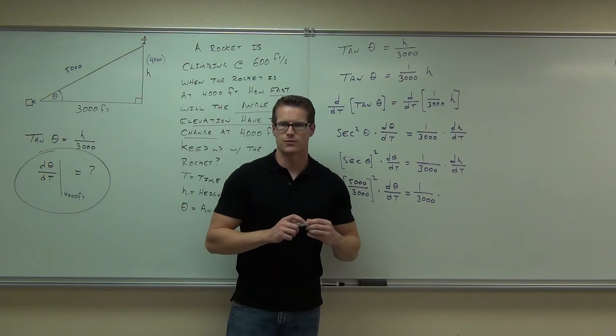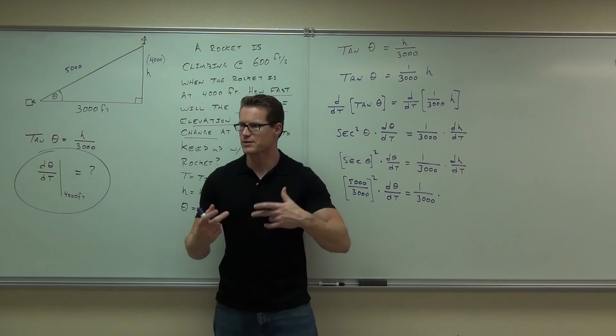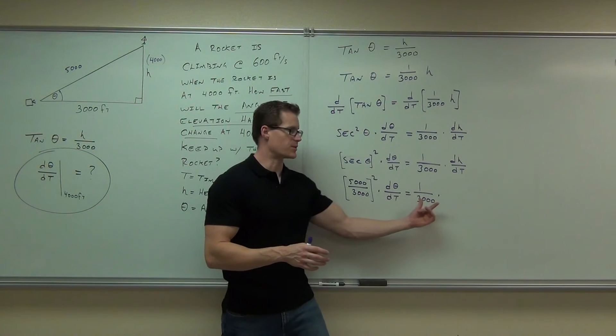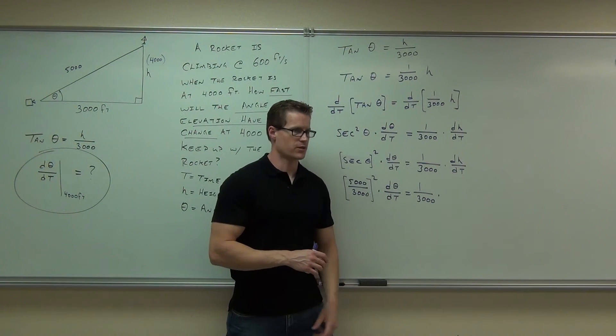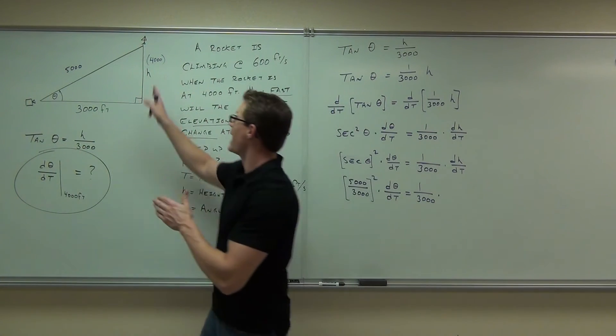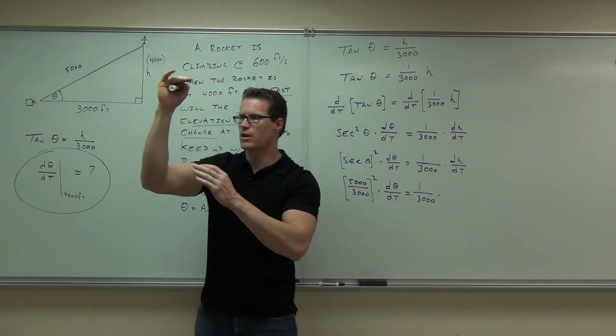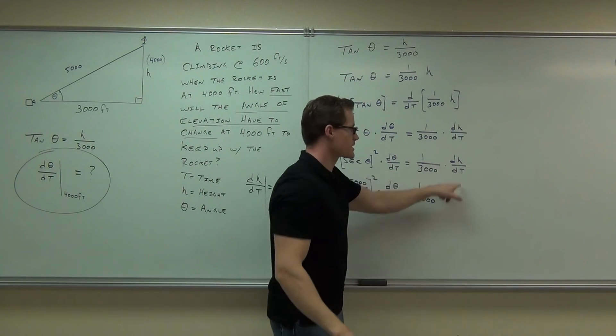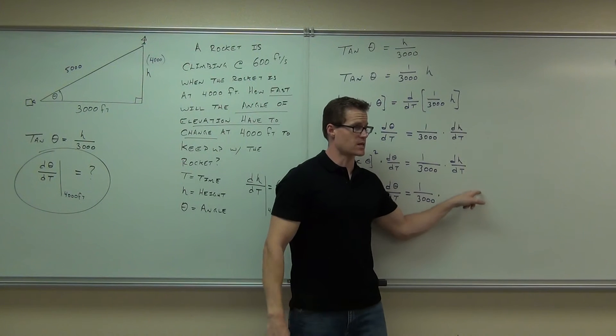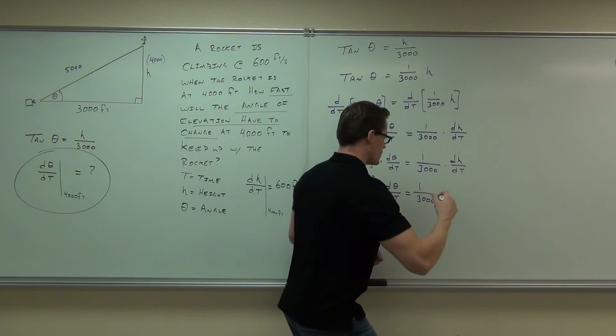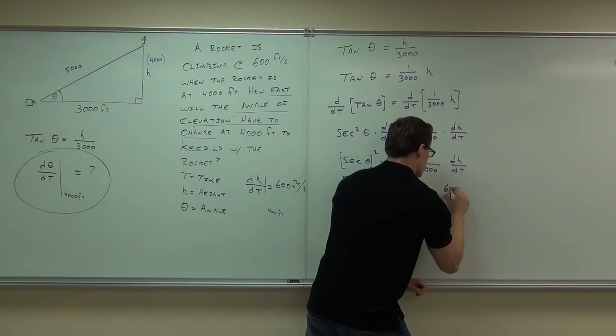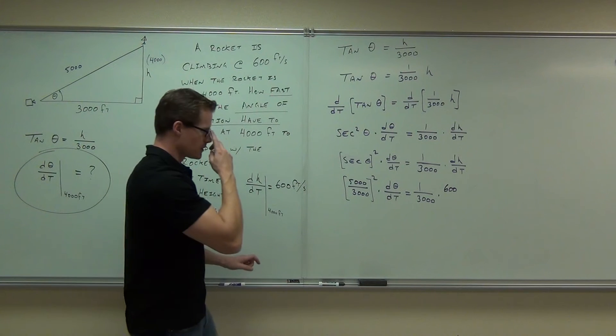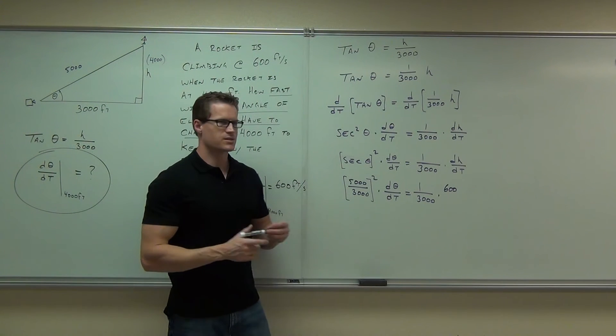Are you okay with this so far, folks? Do you see where the 5,000 over 3,000 is coming from? Let's do the dh dt right now as well. How much is the dh dt that we were talking about? Because when we're at 4,000 feet, we're saying, give me the rate of change of height with respect to time. What did we mark that out as? 600 feet per second.